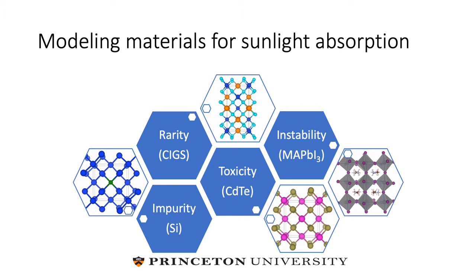Since the invention of the first practical solar cell in 1954, there's been a number of materials developed for sunlight absorption, including silicon, cadmium indium gallium diselenide (CIGS), cadmium telluride, and more recently the hybrid organic-inorganic halide perovskites. These materials, however, aren't without their limitations. For example, silicon requires expensive high-temperature processing, indium is rare, cadmium is toxic, and the hybrid perovskites are unstable, especially in humid environments.